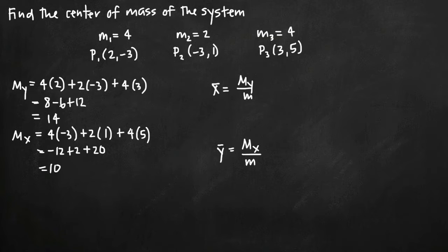Today we're going to be talking about how to find the center of mass of the system. And we've been given three point masses: m₁, m₂, and m₃ at specific coordinate points.